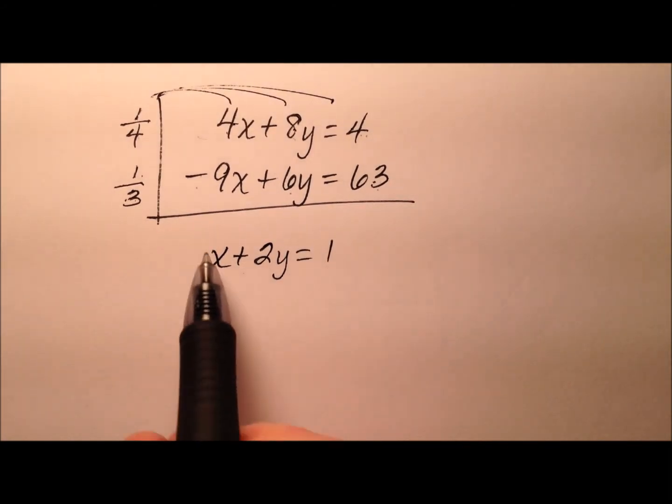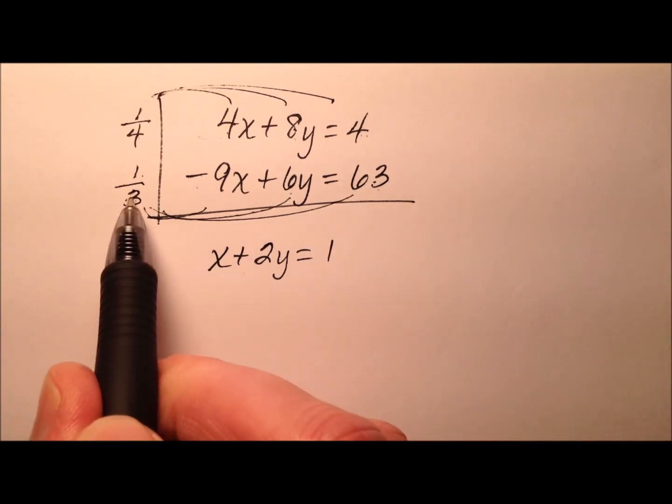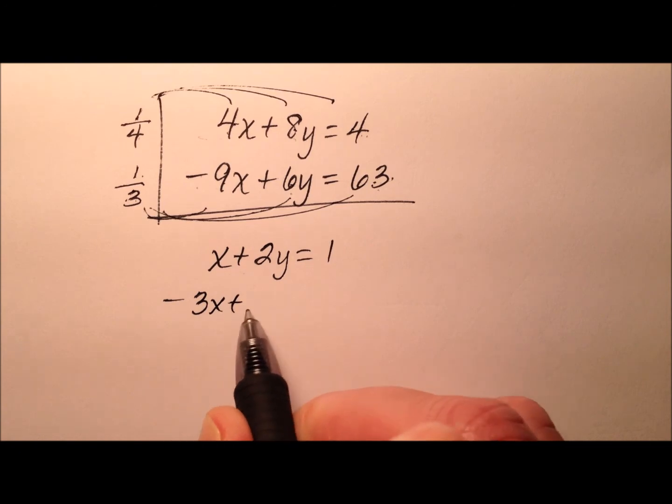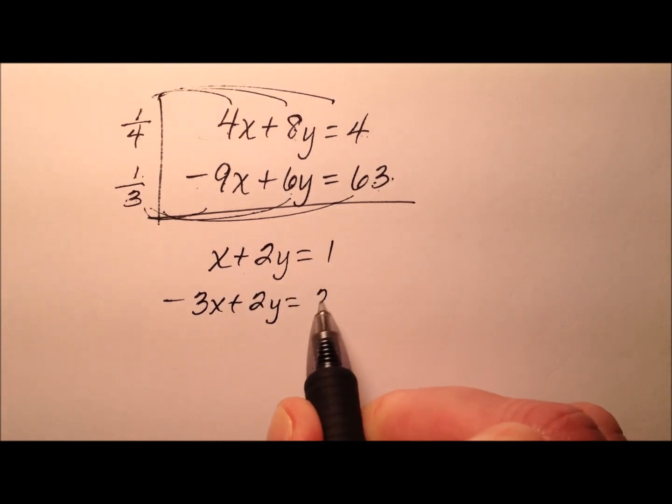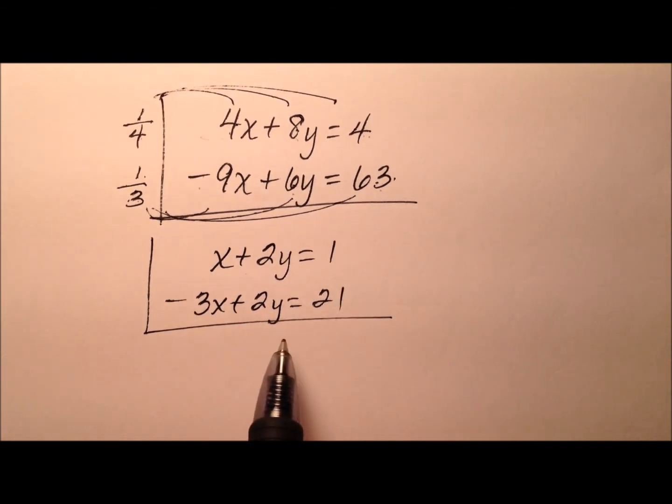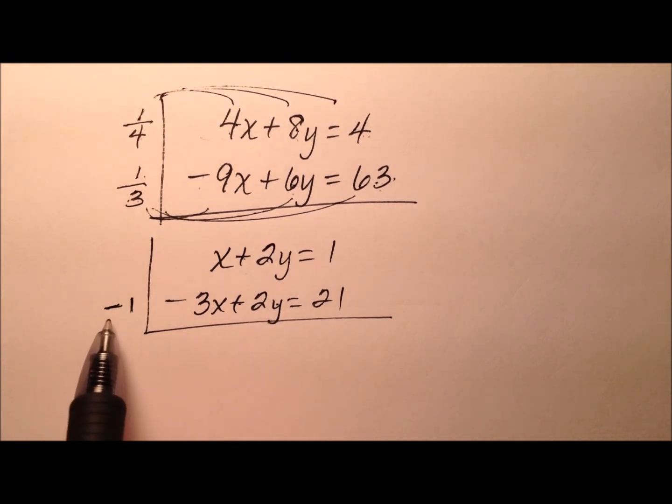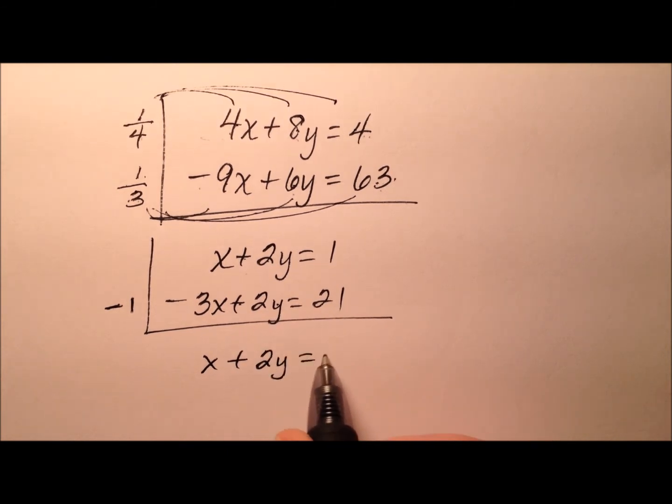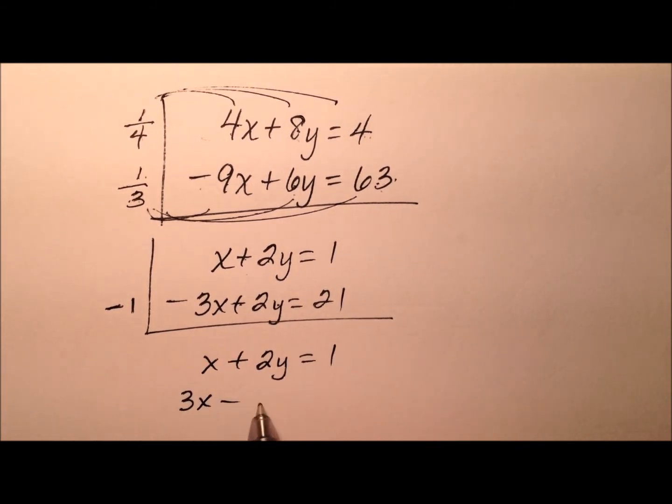So in the first one, dividing each of these terms by 4 gives me x plus 2y equals 1. Those are already smaller numbers. And multiplying by 1 third or dividing each of these terms by 3 gives me negative 3x plus 2y equals 21. So immediately these numbers are much smaller and more manageable to work with. And it looks like that positive 2y and positive 2y, if I just multiplied through by a negative 1, I could get rid of the y's. So we'll rewrite the first equation unchanged.